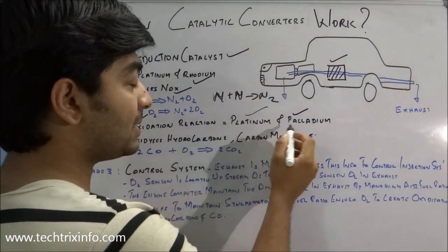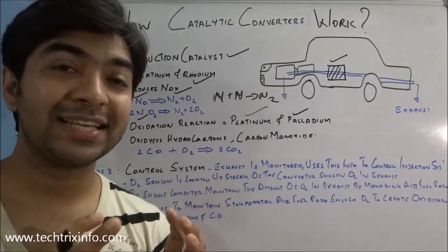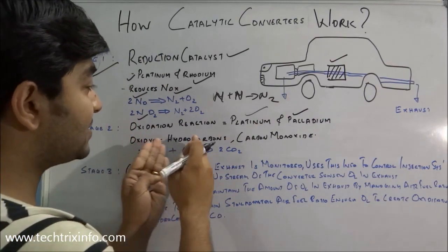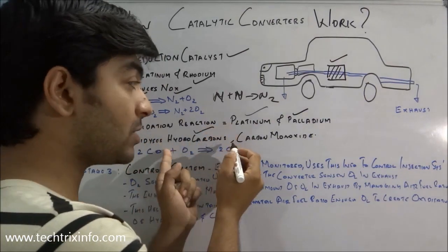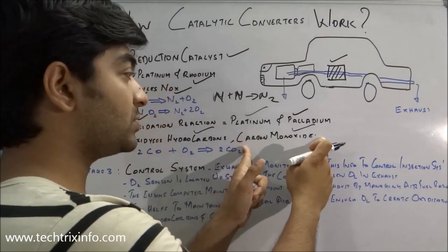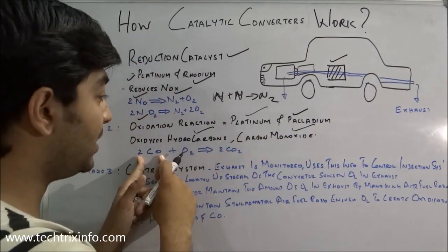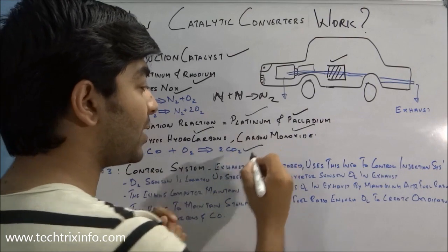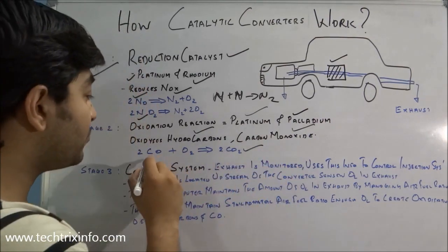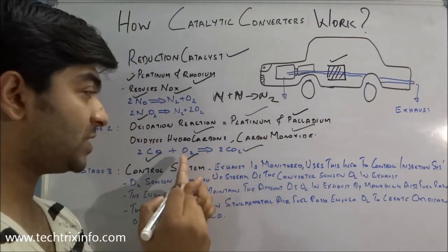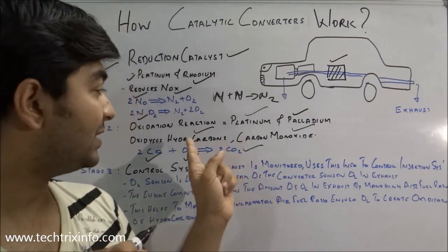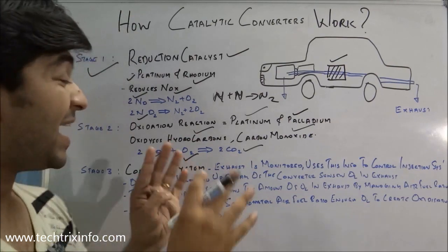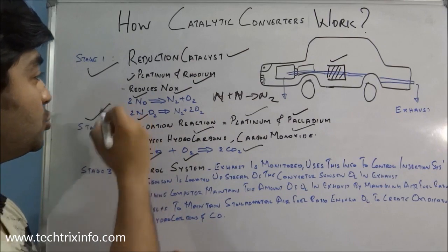Stage two involves platinum and palladium, which catalyze an oxidization reaction. They oxidize the harmful hydrocarbons and the harmful carbon monoxide. Carbon monoxide reacts with oxygen in an oxidization reaction and is converted into less harmful carbon dioxide. Similarly, the hydrocarbons are also converted into water vapor (H₂O) through oxidization. That is stage two.